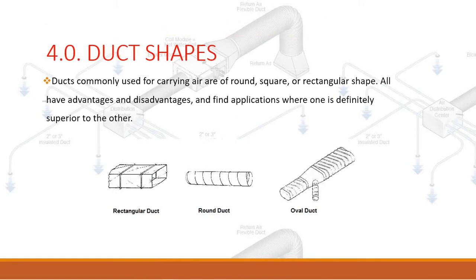Duct shapes. Ducts commonly used for carrying air are of round, square, or rectangular shape. All have advantages and disadvantages and find applications where one is definitely superior to the other.